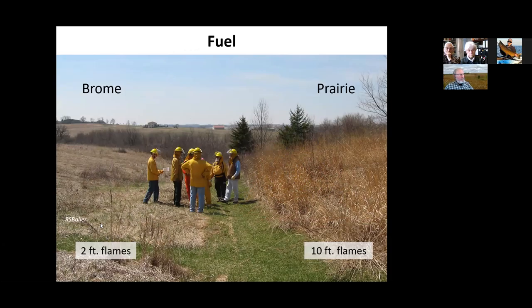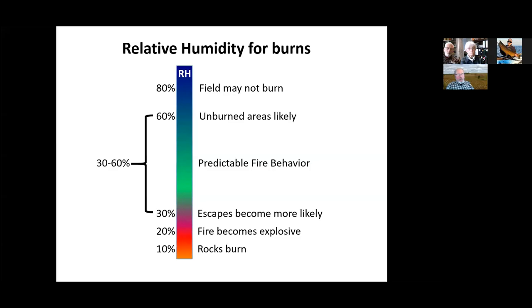There are a lot of different kinds of fuel. Non-native brome grass on one hand will produce a very tame fire, maybe two-foot-high flames. Native warm-season grasses like Indian grass on the other hand could easily produce flames ten feet high under the right circumstances. Knowing what kind of fuel you have and how it's going to behave is extremely important — probably the first thing to think about when planning and running a prescribed burn.